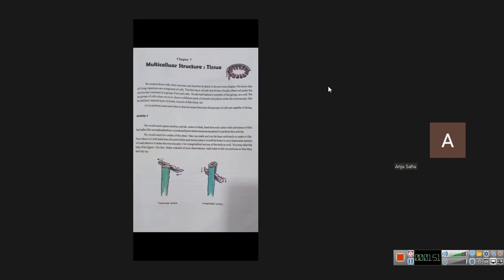In the previous chapter we have studied the structure and function in detail. We know that all living organisms are composed of cells. The thin layer of cork that Robert Hooke observed under the microscope consists of a group of several cells. The group had named a member of the group as a cell.